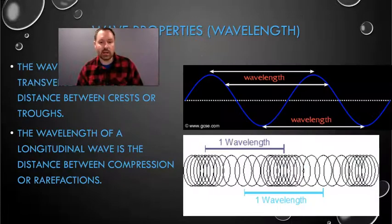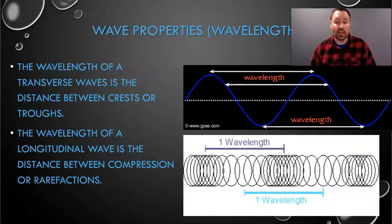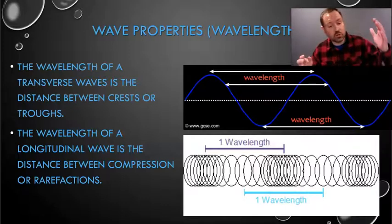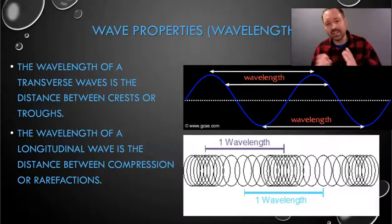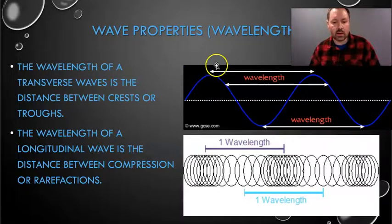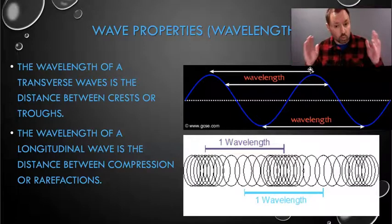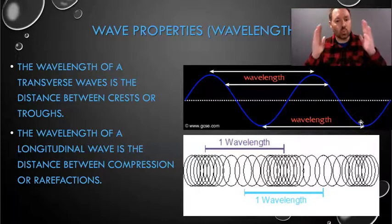So amplitude in a transverse wave is a little bit different than a longitudinal wave. In a transverse wave, it's how tall the wave is. In a longitudinal wave, it's how squished the wave is. Now we know about amplitude. Let's talk about how long the waves are — in this case, we're talking about wavelength. The wavelength of a transverse wave is the distance between crest and crest, or the distance between trough and trough. It really doesn't matter which part of the wave you measure, as long as you're measuring the same part of the wave on the next wave. We're measuring from crest to crest — the distance there is one wavelength. Or we can measure from trough to trough — the distance there is one wavelength.